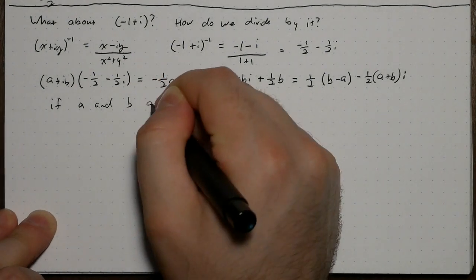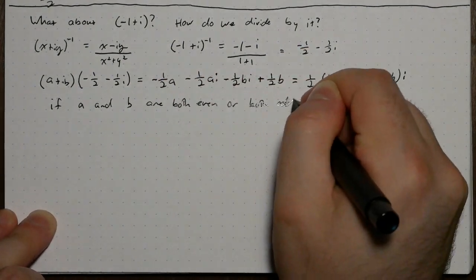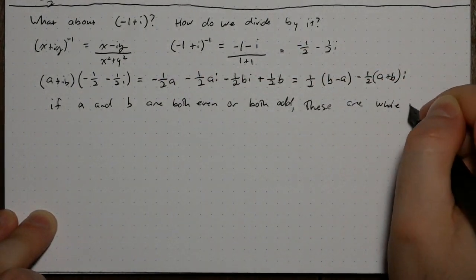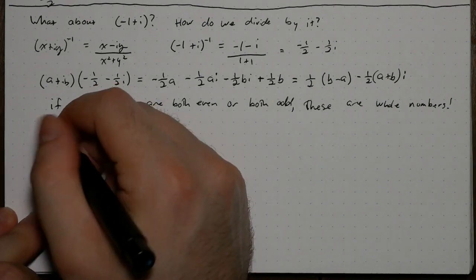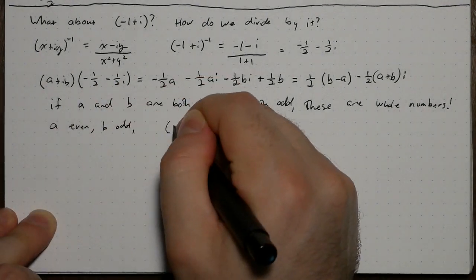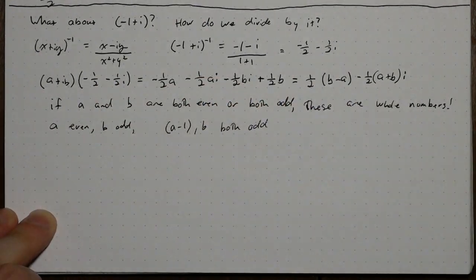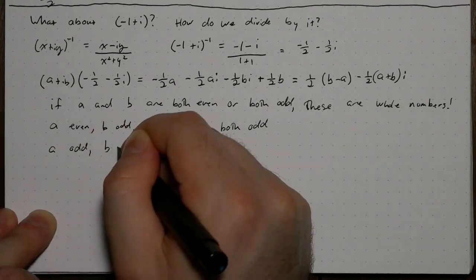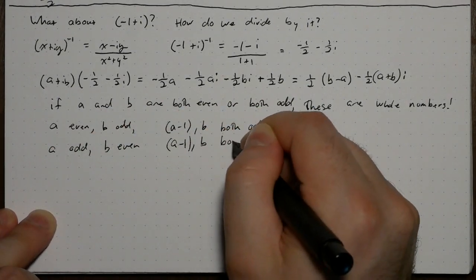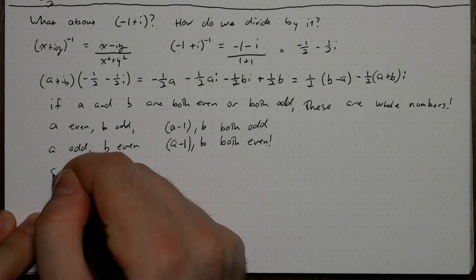Notice anything? If a and b are either both even or both odd, then everything here is a whole number. If a and b have different parities, we can just subtract 1 from a.